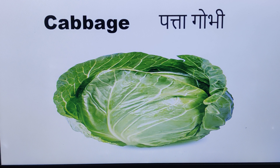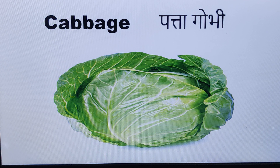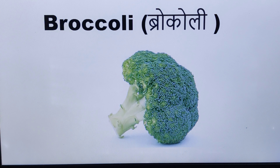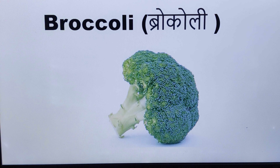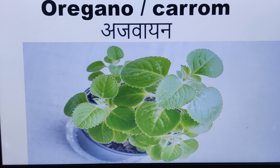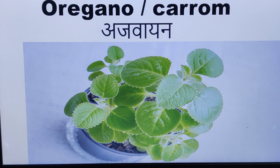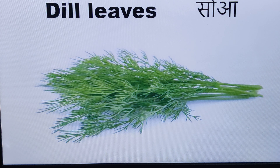Cabbage — Pata Gobi. Broccoli. Oregano. Carom — Ajwain Patta. Dill Leaves — Soa.